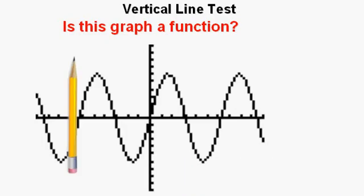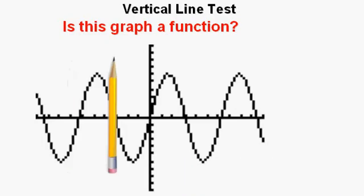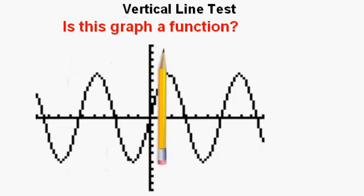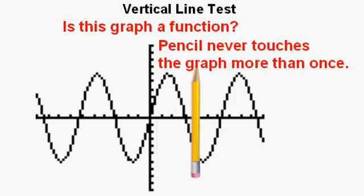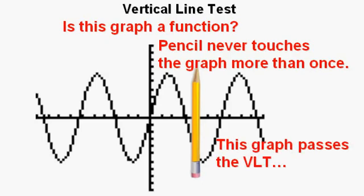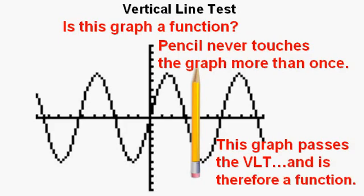Now we have the pencil. And we see that, no matter where we move this pencil, that it will never touch the graph more than once. So we say that this graph passes the vertical line test, or VLT for short, and is, therefore, a function.